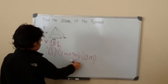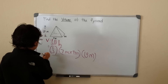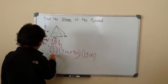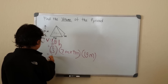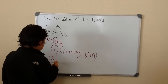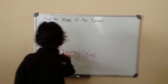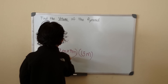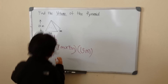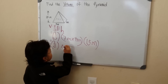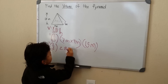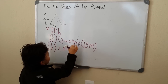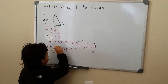So don't cancel it yet, just leave it like that. So 1 over 3, and then 7 — we'll get 7 times 4, which is 28. Okay, 28 meters, and meters times meters is meters squared.